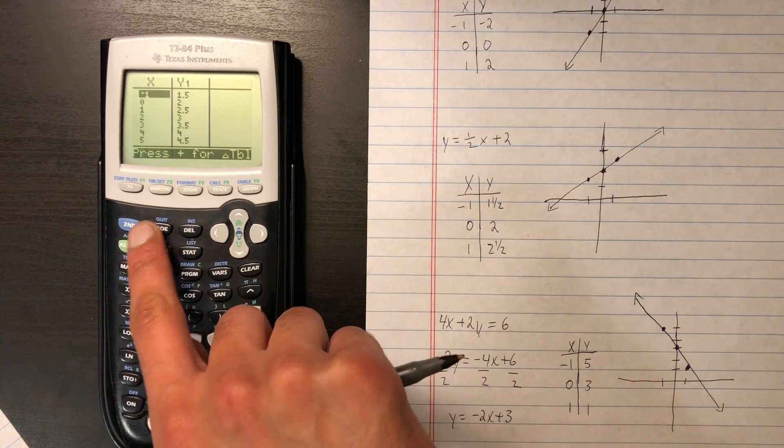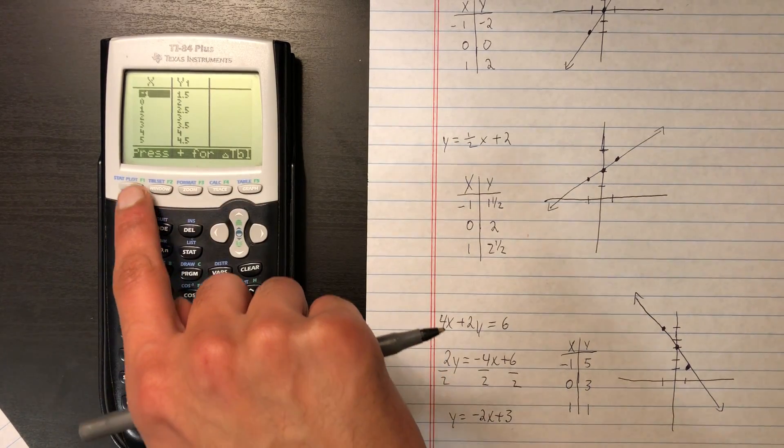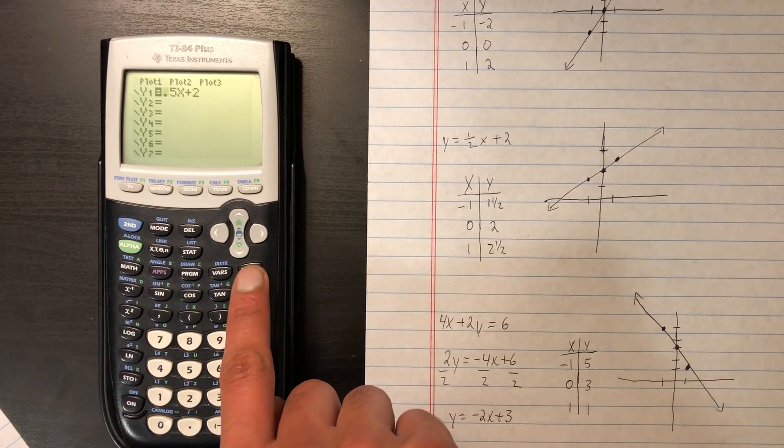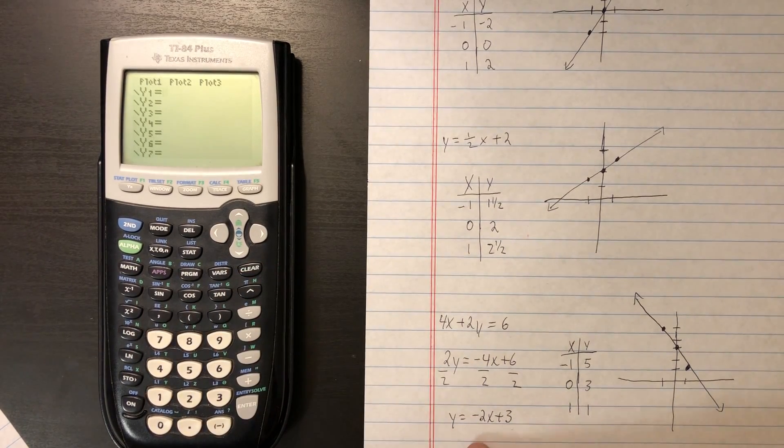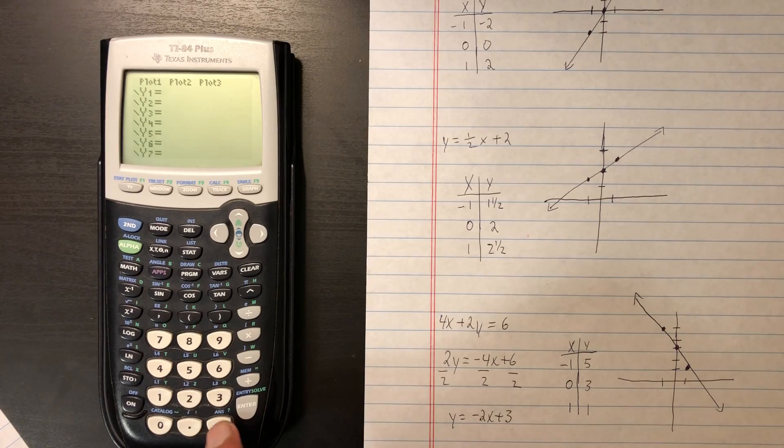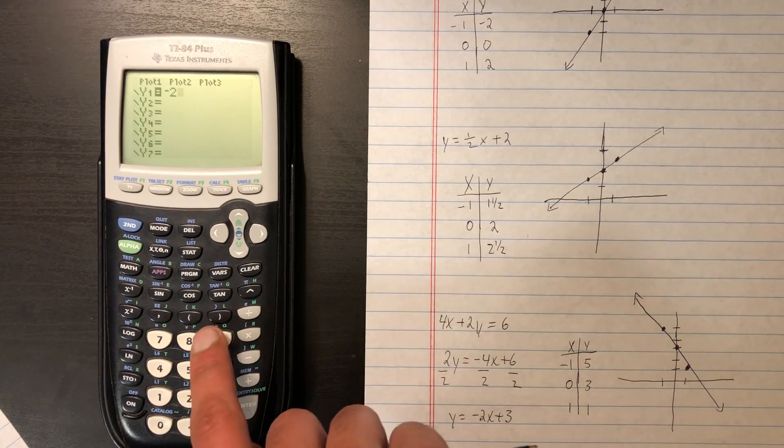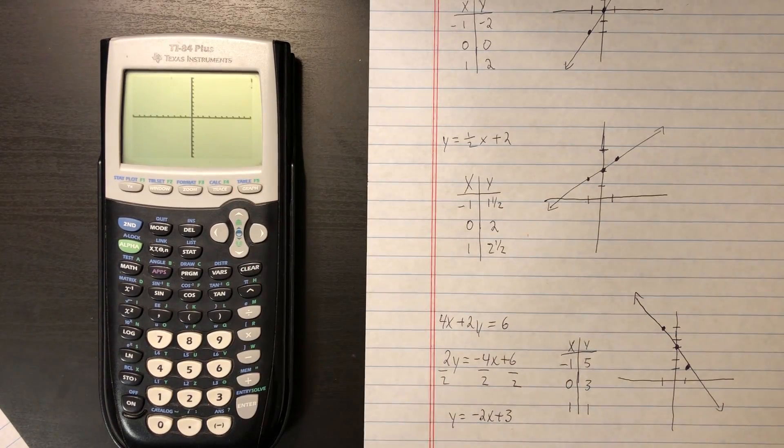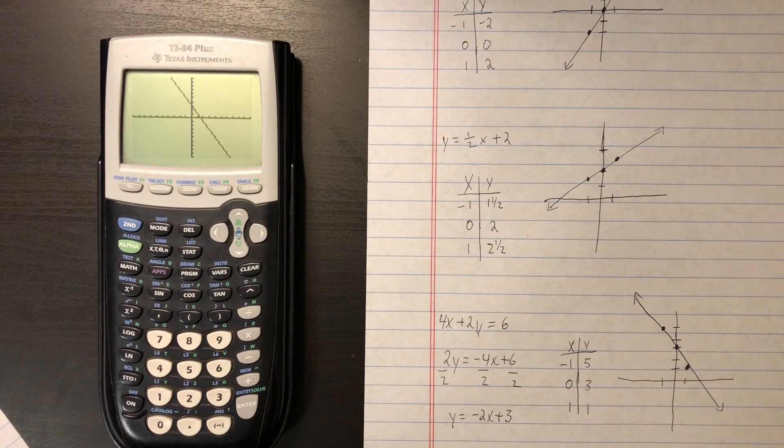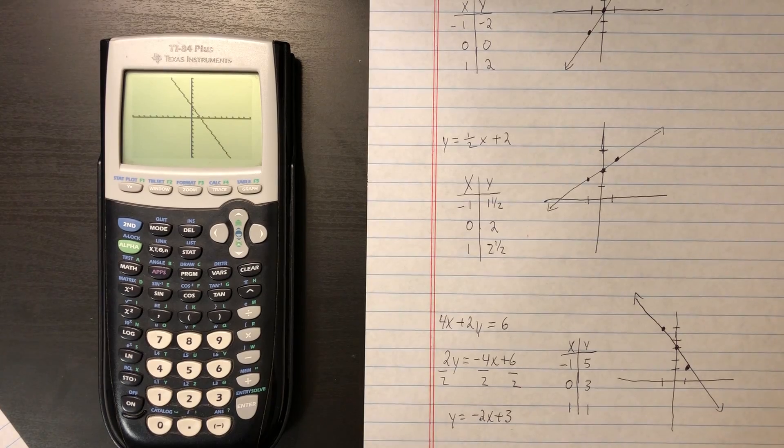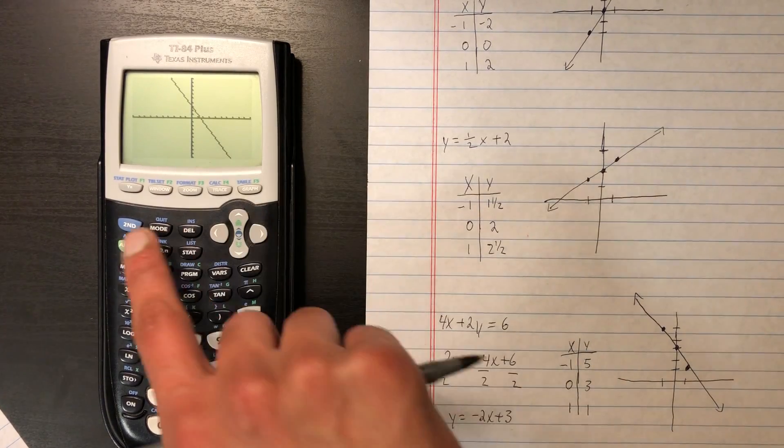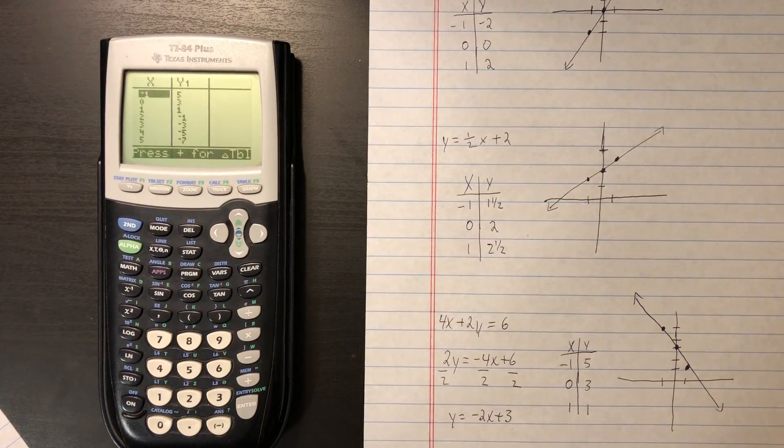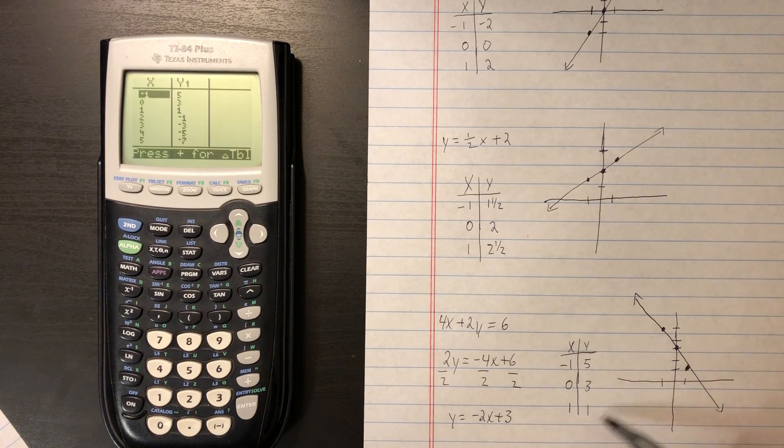So let's graph this real quick. Let's go back to y equals. And we can clear this and enter a new equation of negative 2x plus 3. So negative 2x plus 3. And graph. And there we go. We get a line graph of negative 2x plus 3. And if we go to second table, we get the same values that we got here on paper.